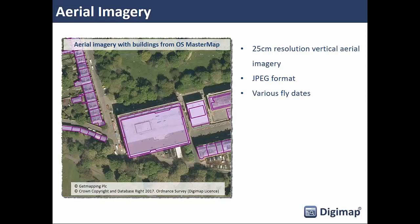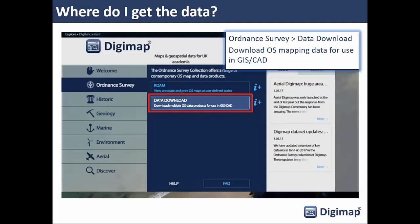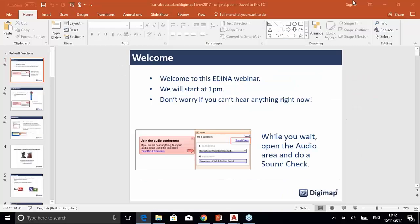We maintain an update page on our help system showing when each dataset was last updated and when it was produced by the data supplier. Whenever we add new data or update existing datasets we update that page, so if you want to know how up-to-date something is you can quickly refer to it. There's a link on the slides.